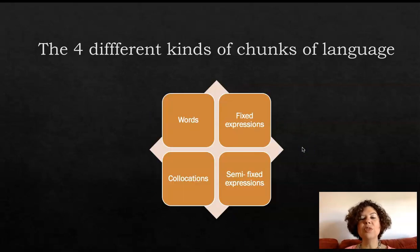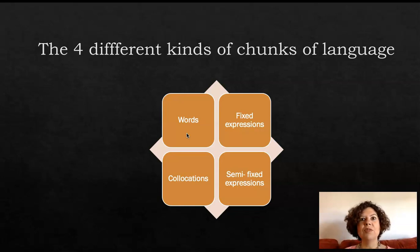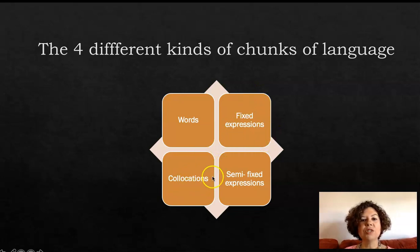So let's see how we can work with chunks of language. First of all, we need to know the four categories of chunks of language. The lexical approach was designed by Michael Lewis, and he tells us that there are four main categories: words, fixed expressions, collocations, and semi-fixed expressions. Words are normal isolated words that come in any dictionary — for example, 'table', 'interview', 'happiness'. We will not go into detail with words because we already know them.